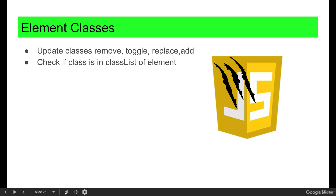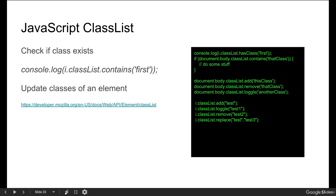There is a better way to update and manipulate classes using JavaScript. In the JavaScript DOM, we can remove, toggle, replace, and add. There's a lot of stuff that we can do using the classList method. We can check to see if a class exists by selecting the element and then using the classList method.